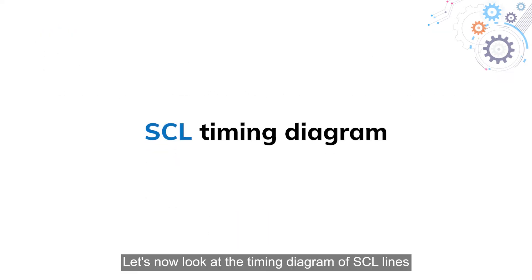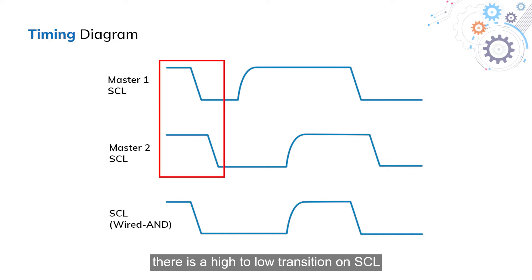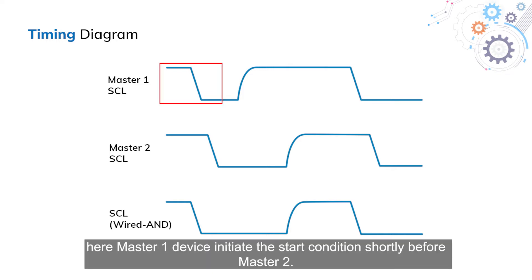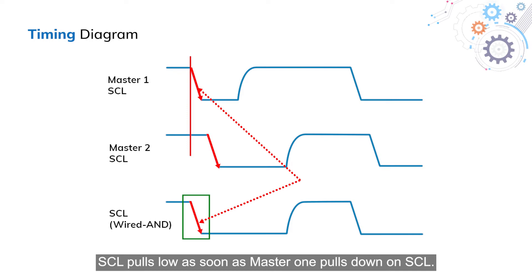Let's now look at the timing diagram of SCL lines. During a start condition where two masters are trying to claim the bus, there is a high to low transition on SCL. Here is an example where two master devices are trying to claim the bus at or near the same time. Master 1 device initiates a start condition shortly before master 2. Master 1 pulls SCL down before master 2. With the wired-AND connection, SCL pulls low as soon as master 1 pulls down on SCL.